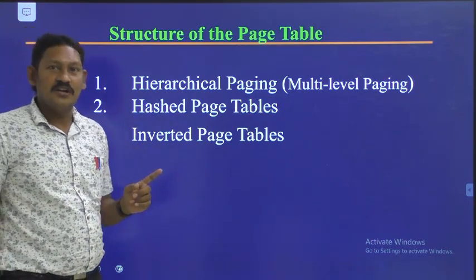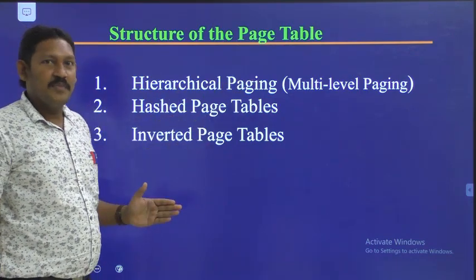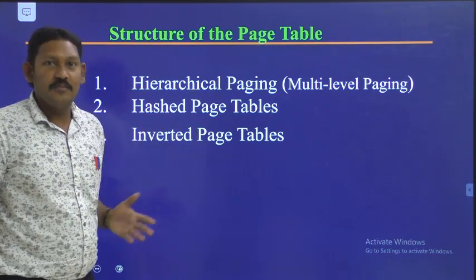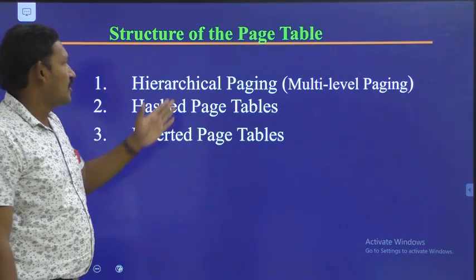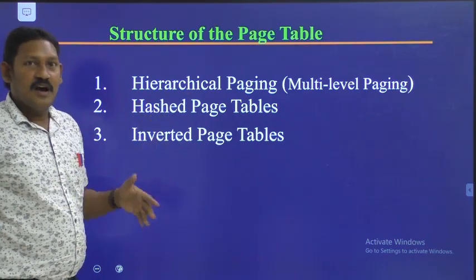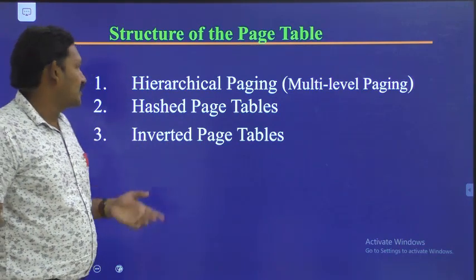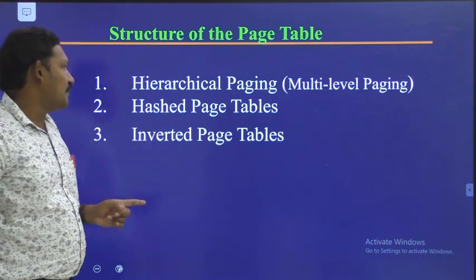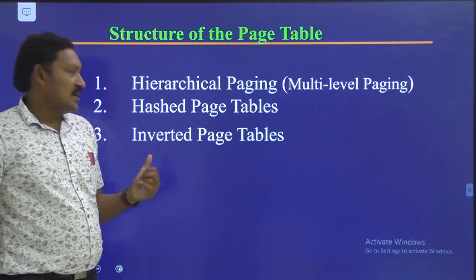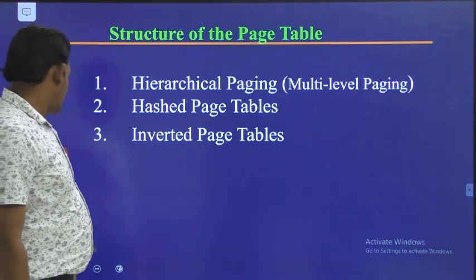The structure of page table consists of three varieties. The first one is hierarchical paging — we can also call it multi-level paging, two-level paging, or three-level paging. The second one is hashed page table. The third one is inverted page table. We will see each of these in detail one by one.